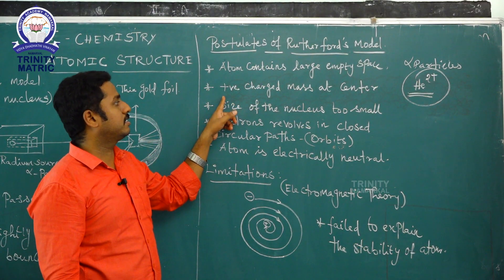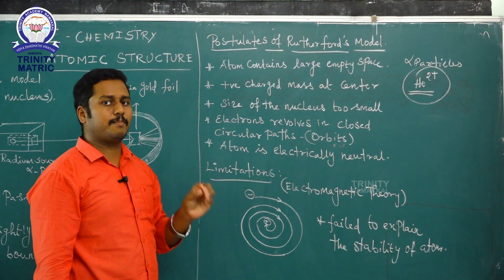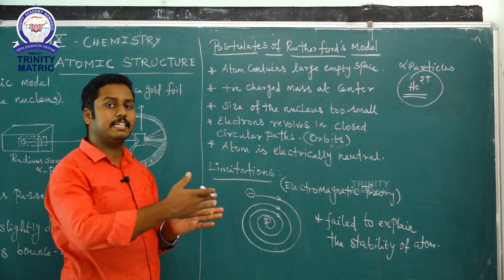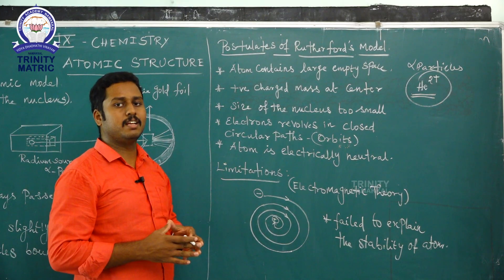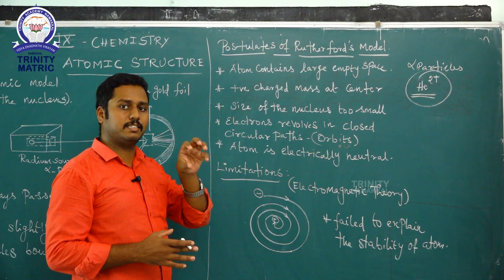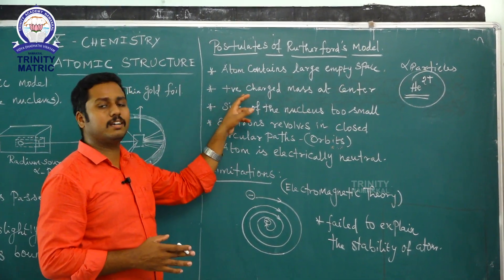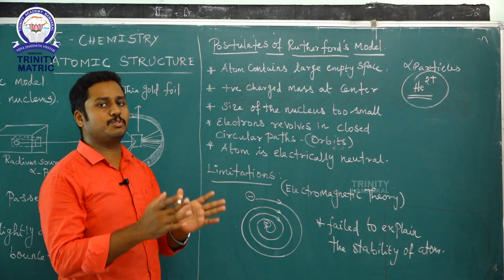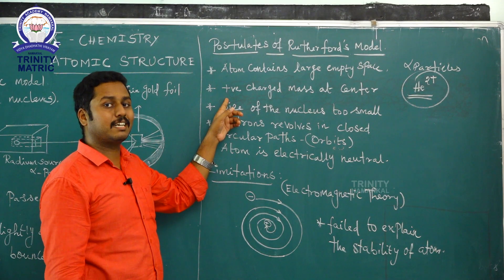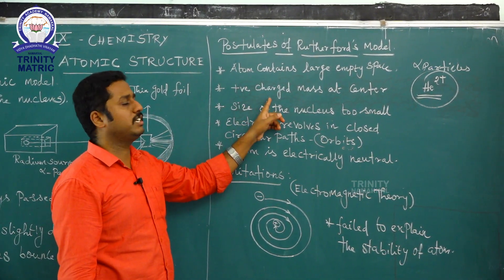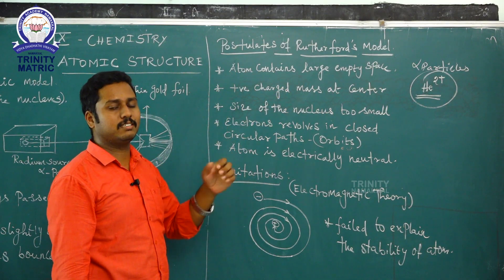The second postulate: there is a positively charged mass at the center of the atom. Some alpha particles were slightly deflected because at the center there is a high positive charge density. That high positively charged mass is called the nucleus.